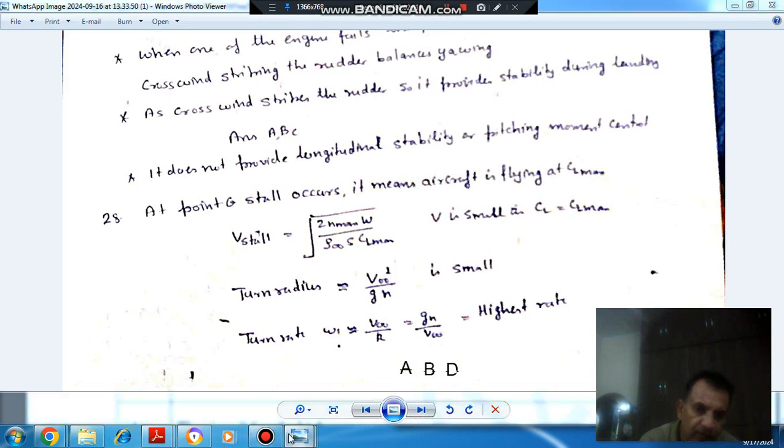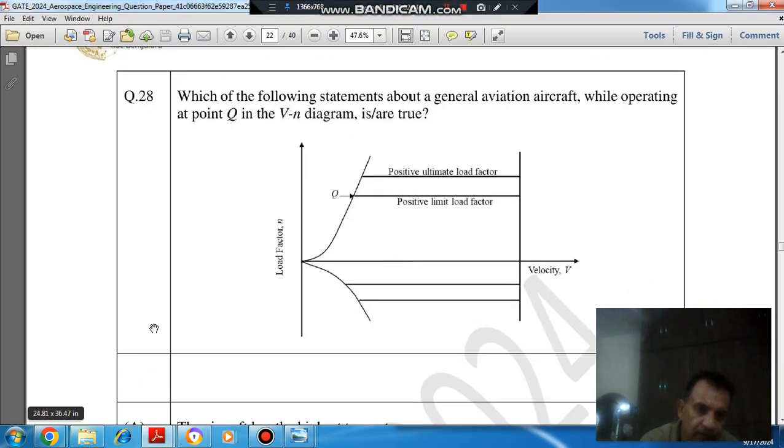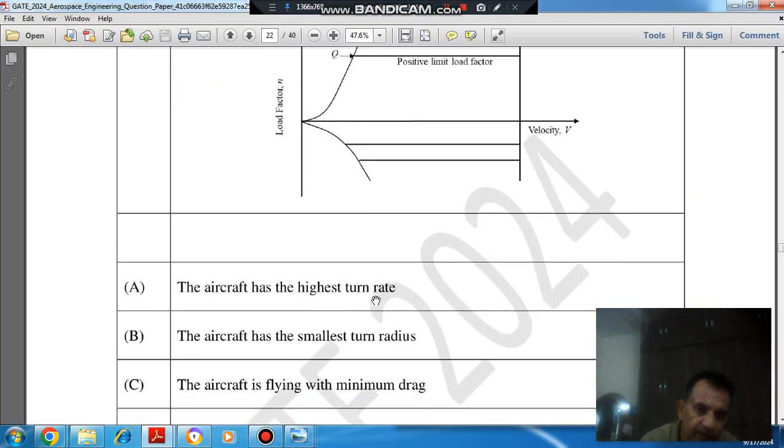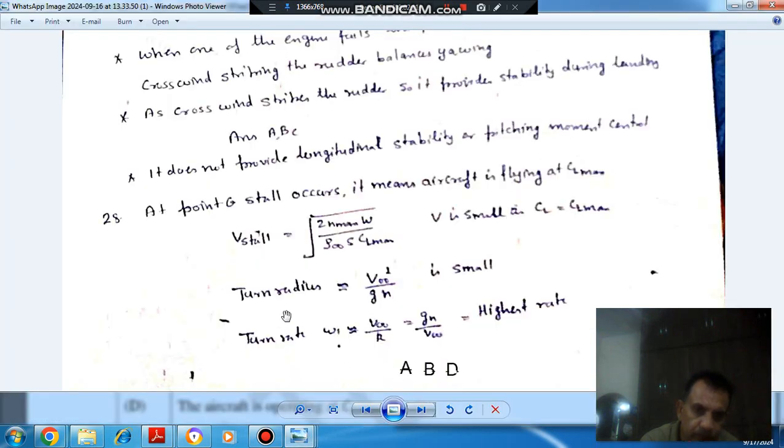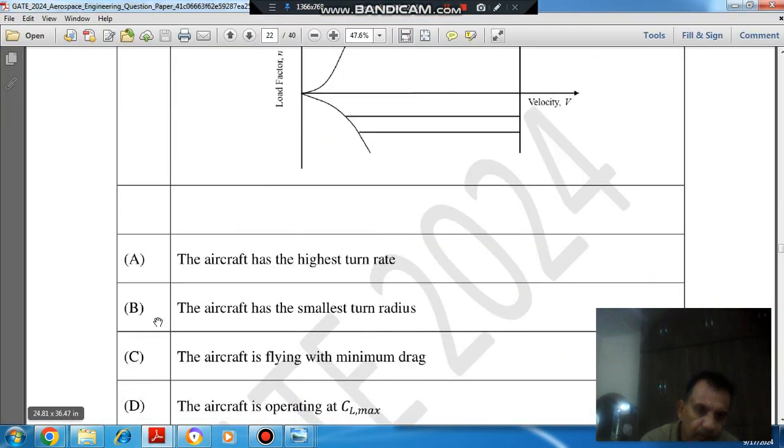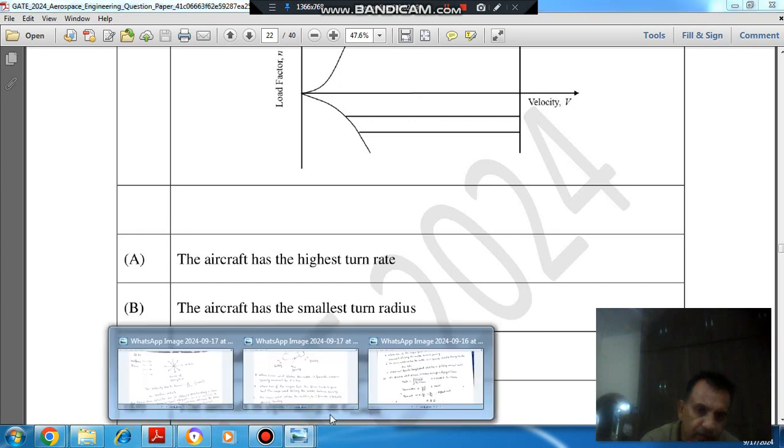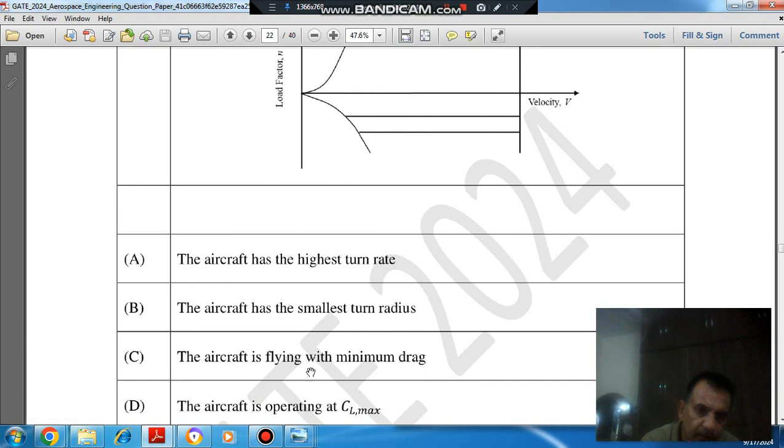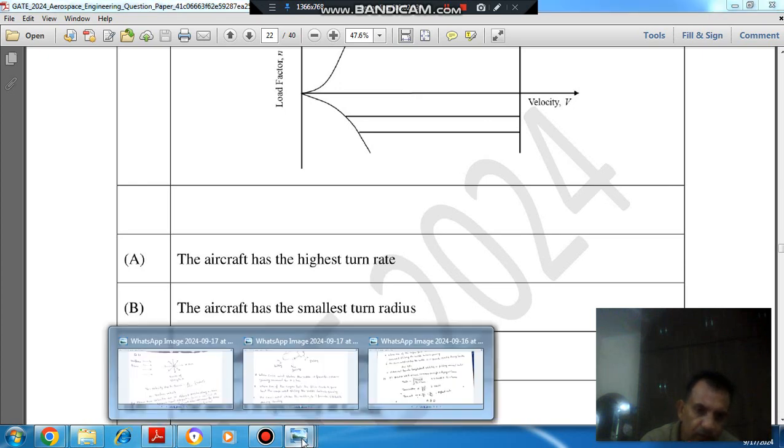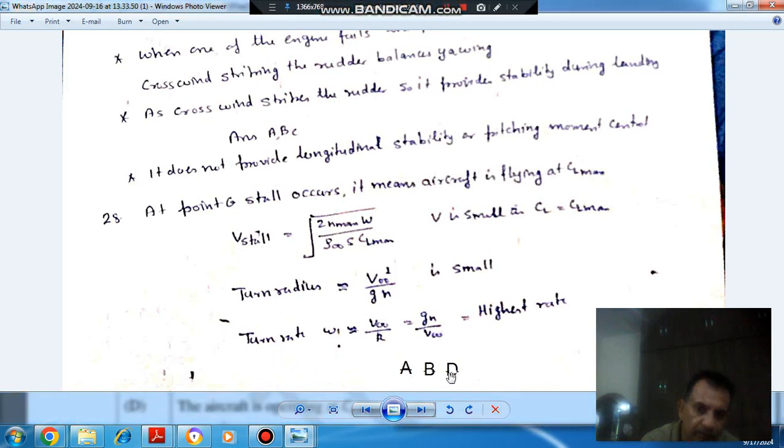So answer is A, B and D. Answer A has highest turn rate. That is from this. And smallest turn radius, that is from second. And aircraft is operating at CL max. So answer is A, B and D.